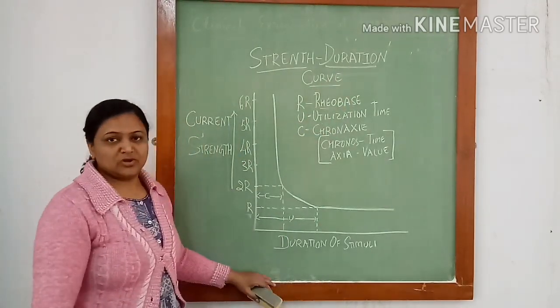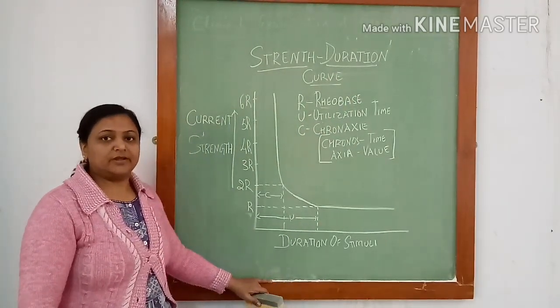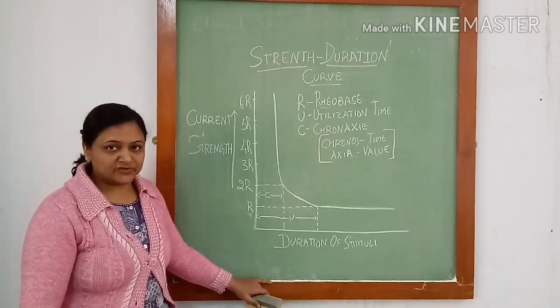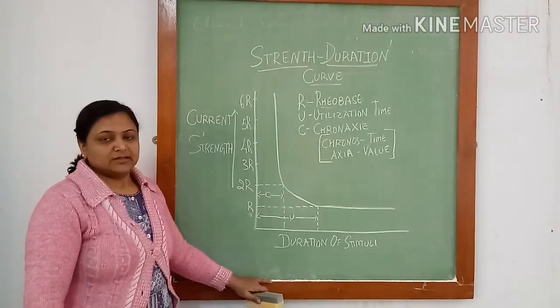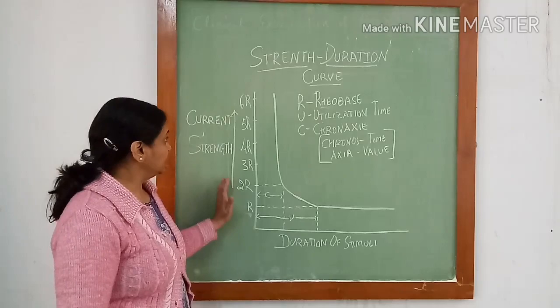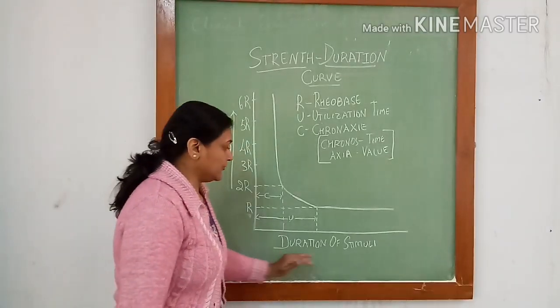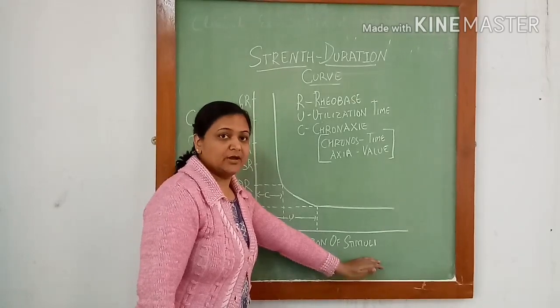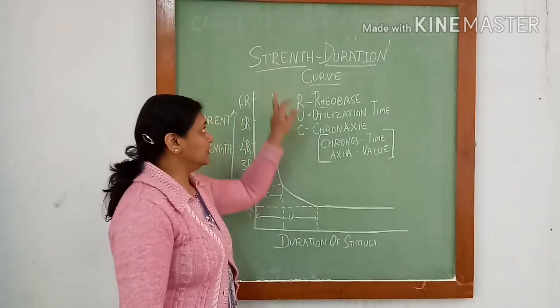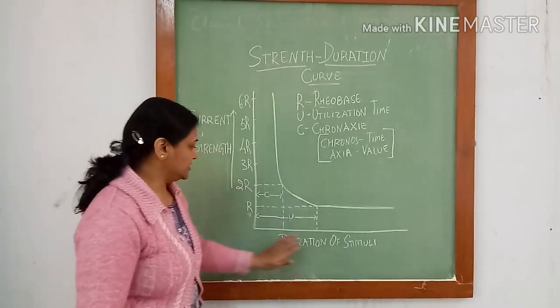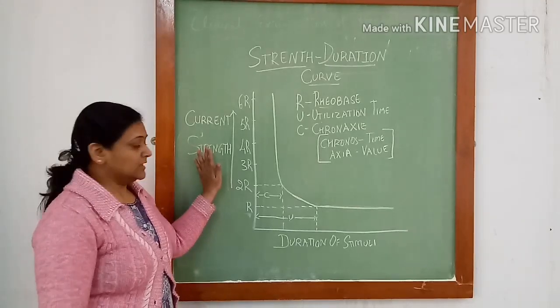A minimal stimulus which when given for a duration of time produces a response. The graph of different strength of stimulus and the duration for which it is applied to produce a response is known as strength duration curve.